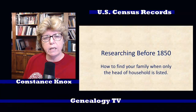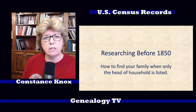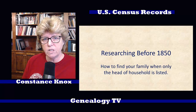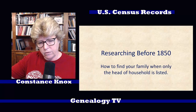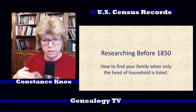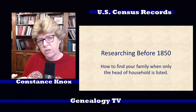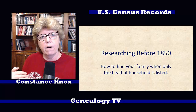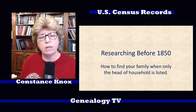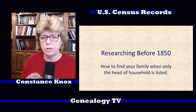As we go back in time, there are tricks to learning how to do research prior to 1850. If you've done the research in 1900, 1880, 1870, and so on, and you're going back, all of a sudden before 1850 they're only listing the head of household. How do you find your family and confirm that that's them? There are some tricks, and I'm going to show you how to do that.